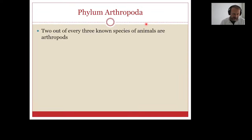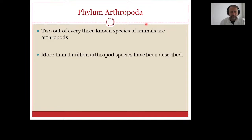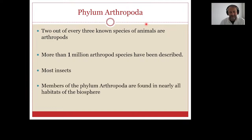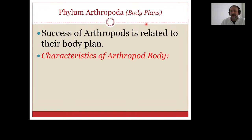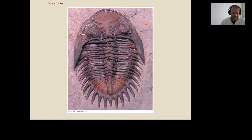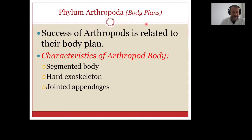Phylum Arthropoda: two out of every three known animal species are arthropods; more than one million arthropod species have been described, most of them insects. Members of phylum Arthropoda are found in nearly all habitats of the biosphere — it is the most successful animal phylum. Characteristics of the arthropod body are: segmented body, hard exoskeleton, and jointed appendages.